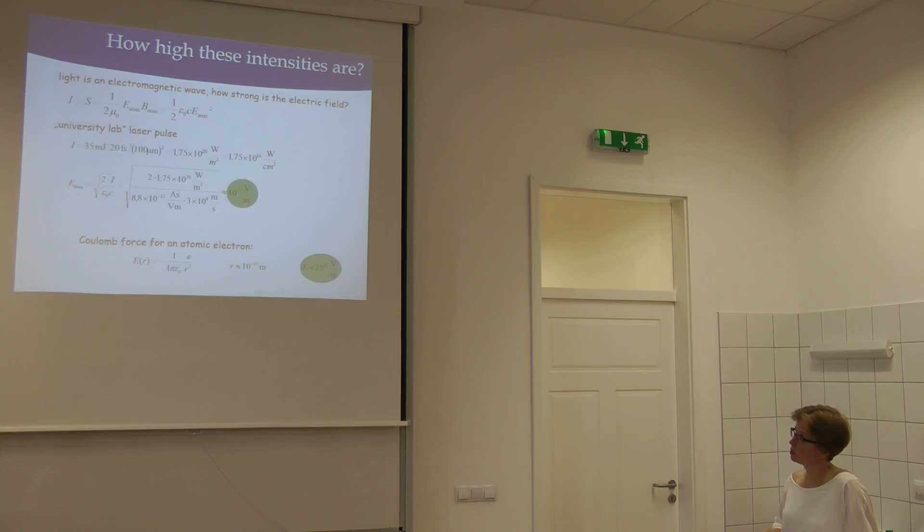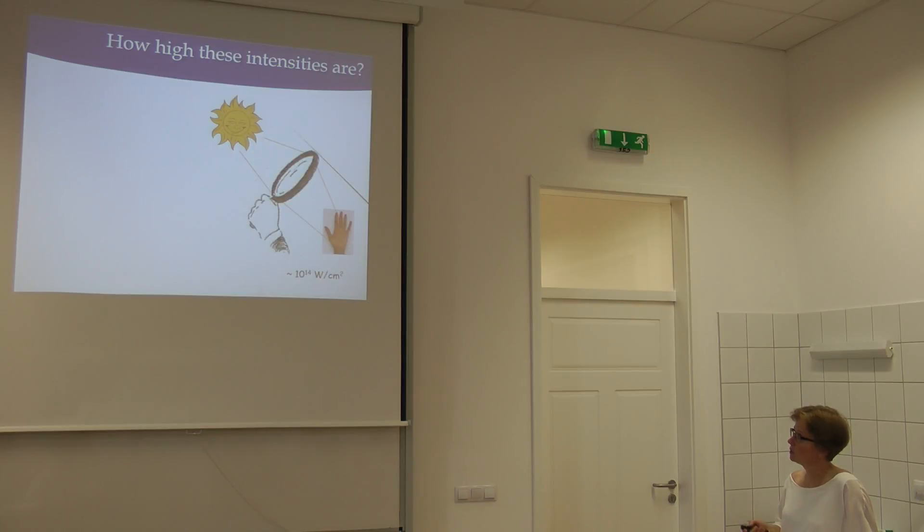In a leading research infrastructure you would have much higher intensities. Just a very simple example of what these intensities correspond to. If you take all the sunlight that falls onto the earth, not all the light of the sun, just a small proportion that falls onto the earth, and you focus it down onto your palm, then you would get 10 to the 14 watts per square centimeter. So you would need a magnifying glass which is the same size as the cross section of the earth. This is something we can produce routinely in any science lab.